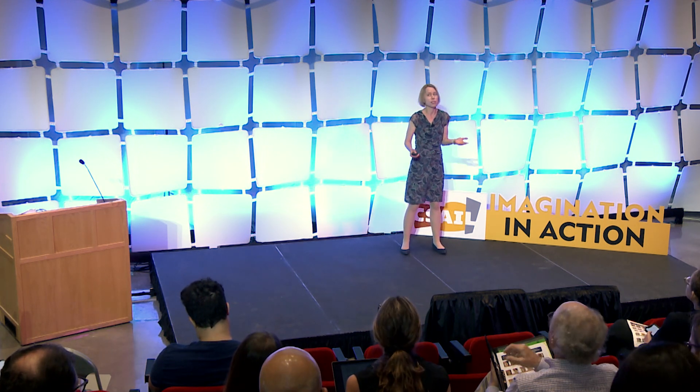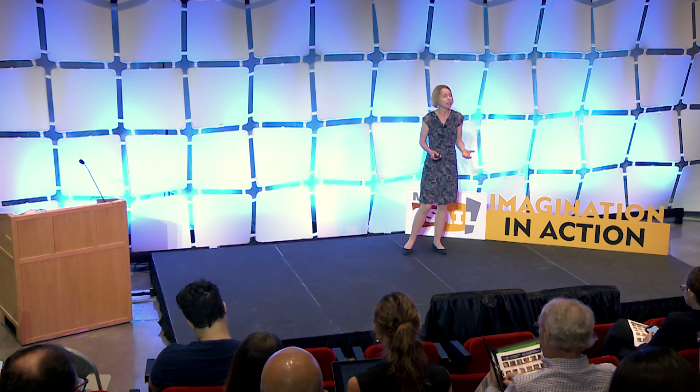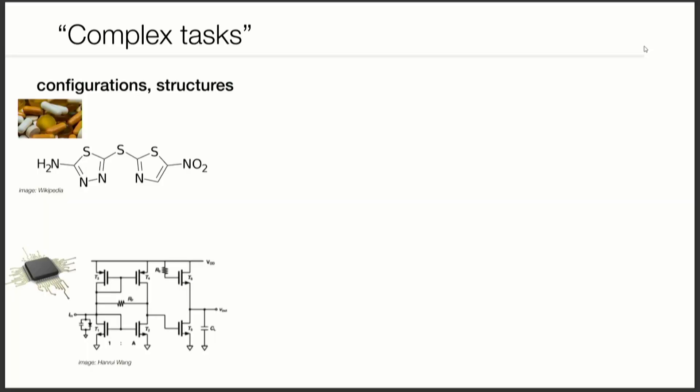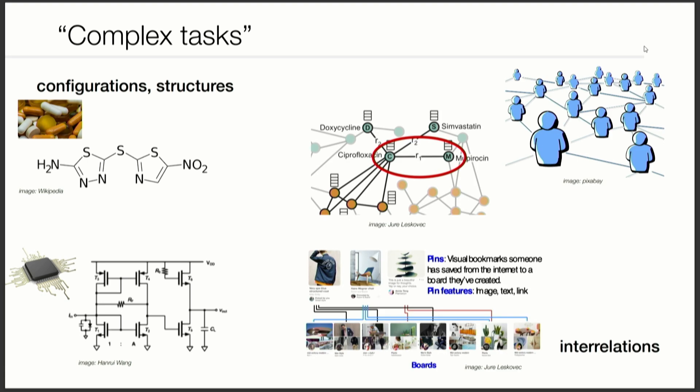I want to give you some recent ideas on how to start thinking about them for a certain set of tasks. The tasks I'm thinking about are things like learning from structures and configurations — like molecules, where we're interested in drug design, or circuits for chip design, or data with interrelations like social networks, interactions between drugs and targets, recommendation, et cetera.